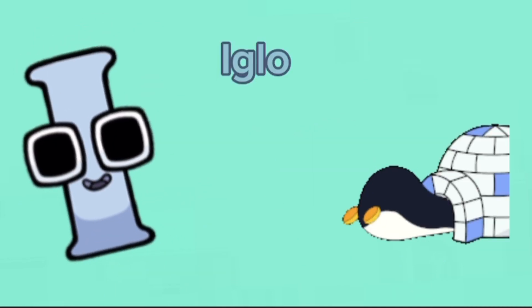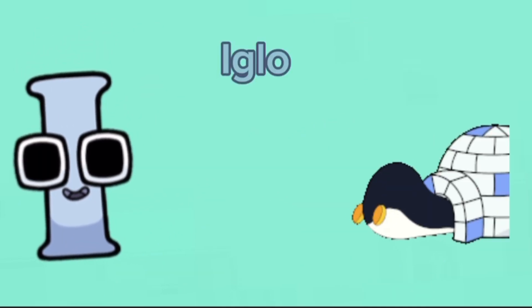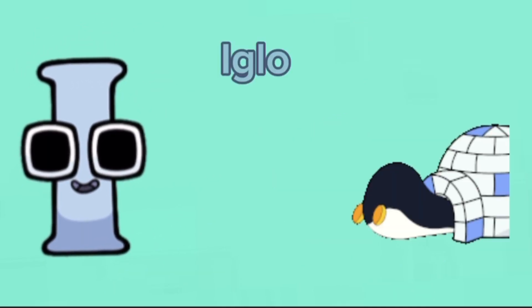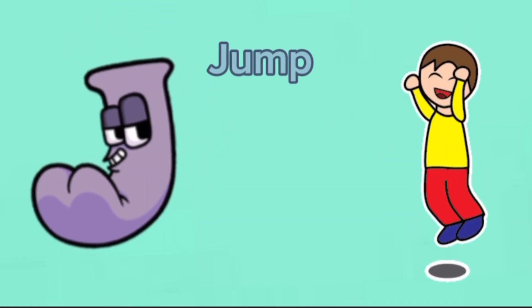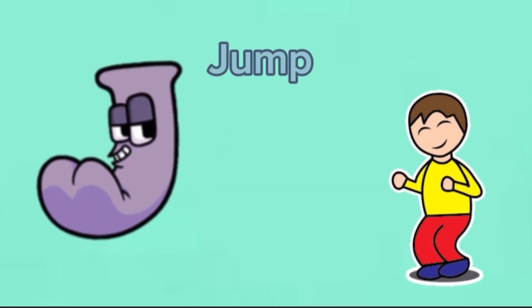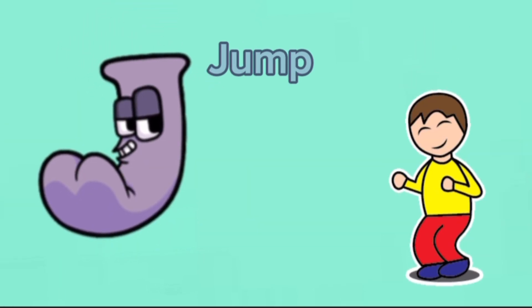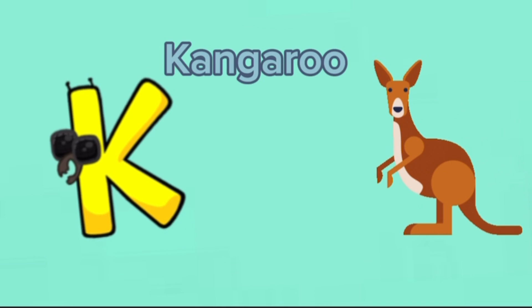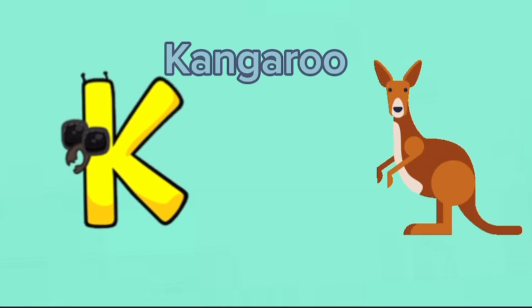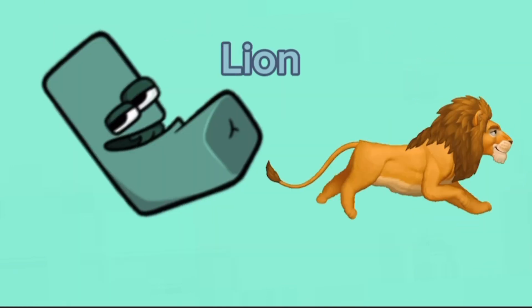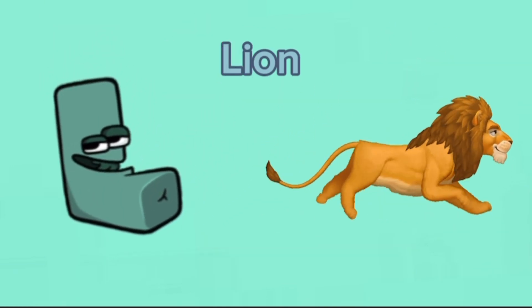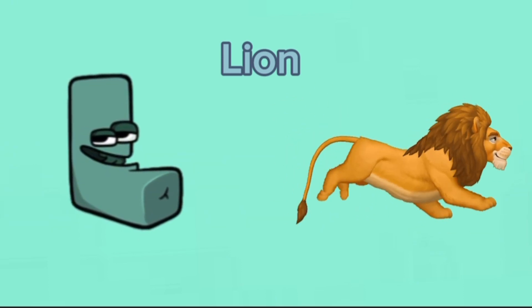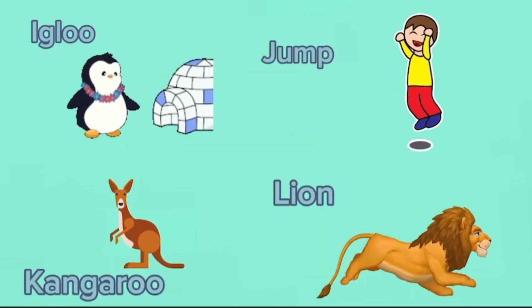I is for igloo, i-i-igloo. J is for jump, j-j-jump. K is for kangaroo, k-k-kangaroo. L is for lion, l-l-lion.